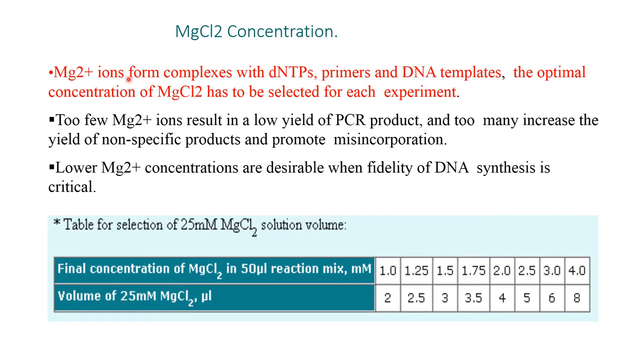Magnesium concentration: magnesium ions form a complex with dNTP, primer, and DNA template. The optimum concentration of magnesium chloride has to be selected for each experiment. Too few magnesium chloride ions result in low yield of PCR product, and too many increase the yield of non-specific products and promote misincorporation. Lower magnesium concentrations are desirable when fidelity of DNA synthesis is critical. This is the table for selection of 25 millimolar magnesium solution.